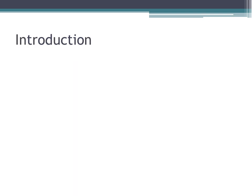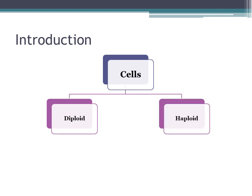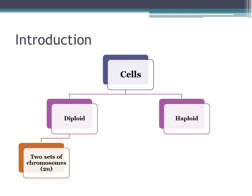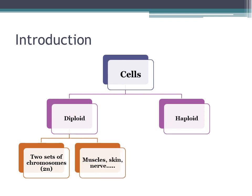To introduce our lesson, we are going to start by dividing our body cells into two types, which are diploid and haploid. Diploid cells are those cells which have two sets of chromosomes in their nuclei. Two sets of chromosomes are symbolized by 2N. Examples of diploid cells are our muscle cells, our skin cells, and our nerve cells. Most of our body cells are called diploid.